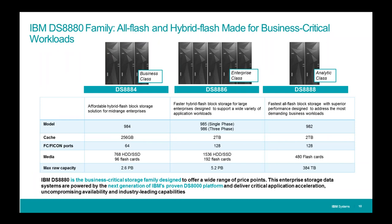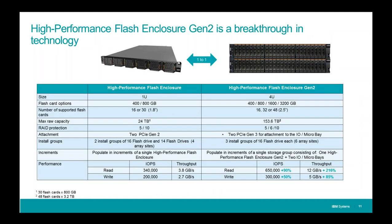Here's a quick look at the family. There are three separate members — they're not upgradable to each other. We have the 8884, the entry-level system; the 8886, which is the workhorse version; and the all-flash 8888, with capacities up to 5.2 petabytes with the 8886. The Gen 1 high-performance flash enclosure was a 1U container with up to 30 1.8-inch cards. Now we're moving to a 4U container that can have up to 48 drives. The flash options in Gen 1 were limited to 800 gigabytes maximum; now we're going to 3.2 terabytes as the largest drive.